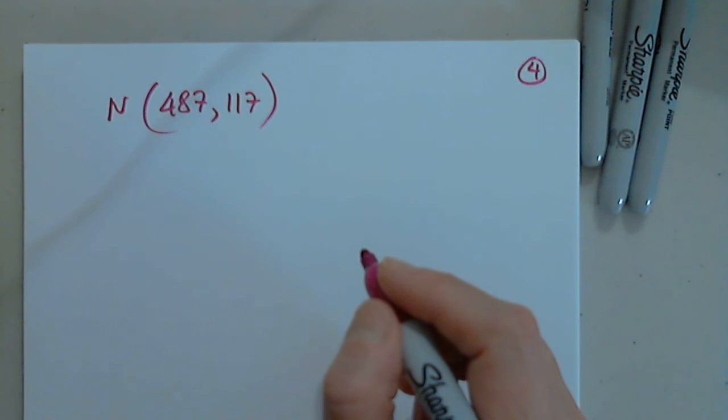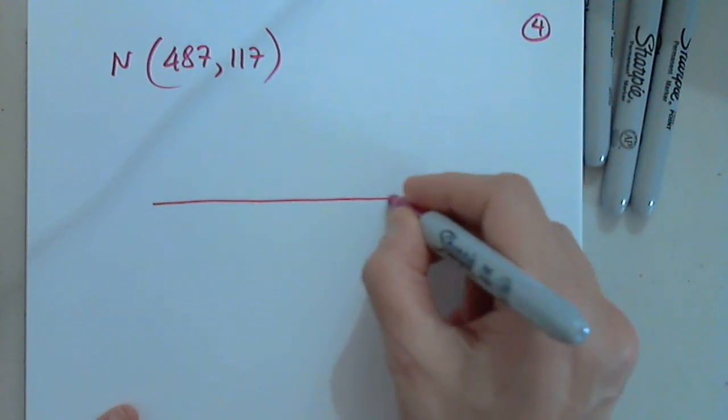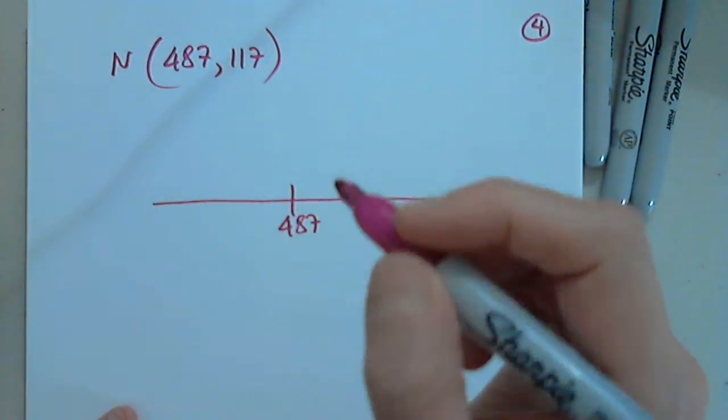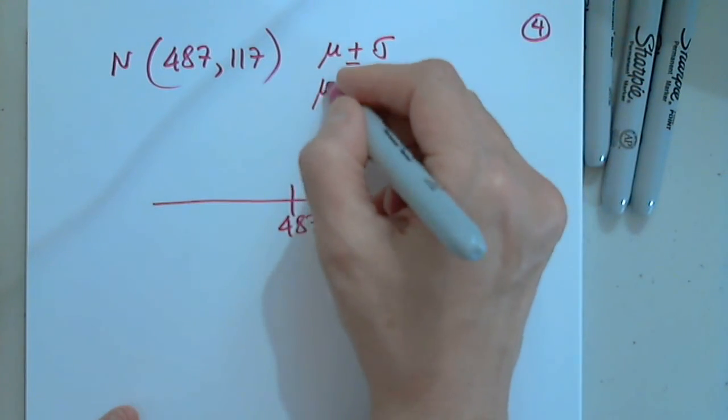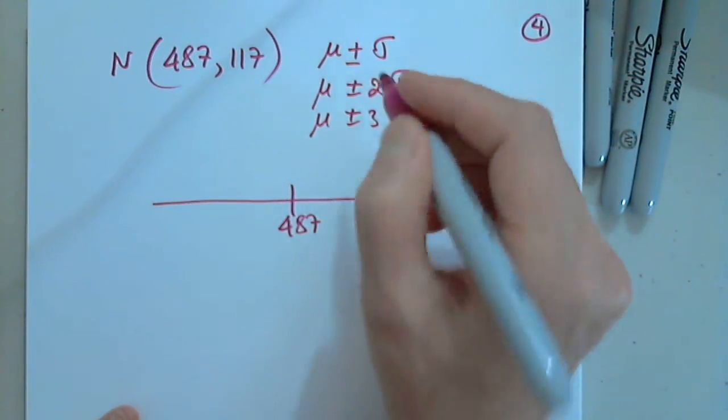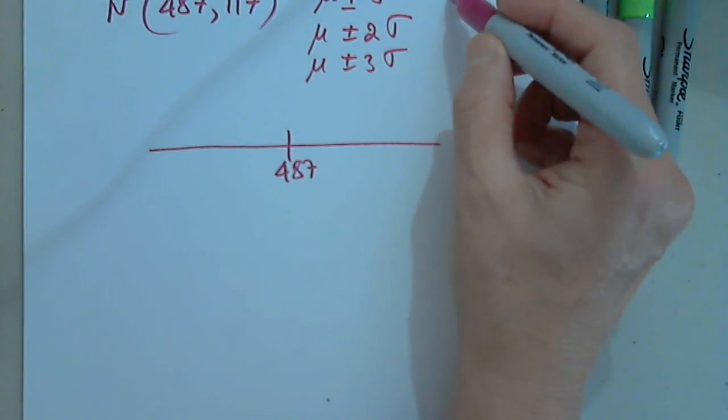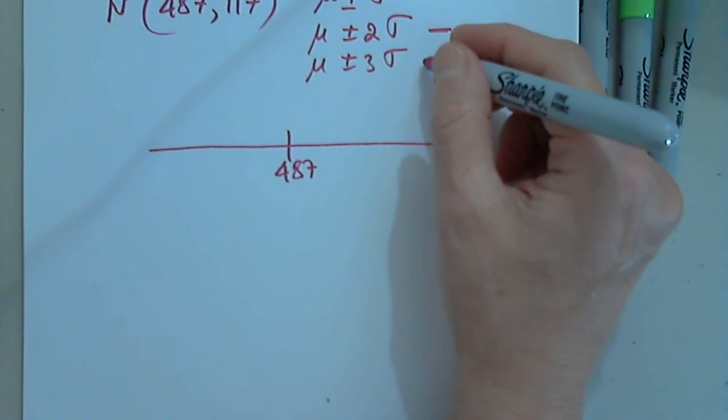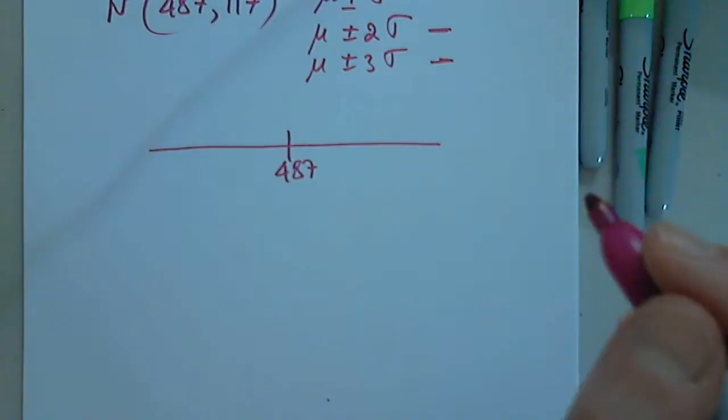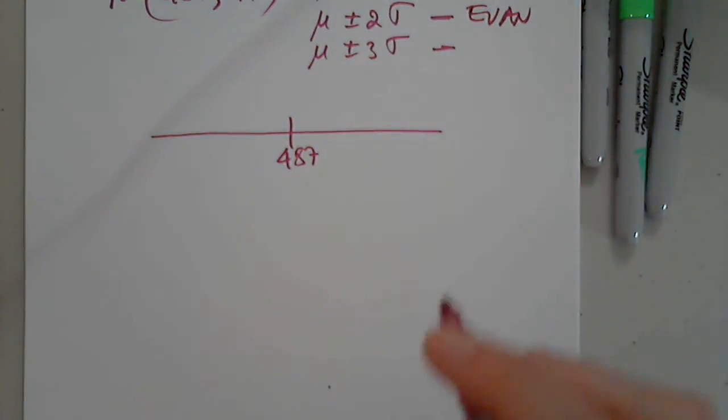So they want mu, they want all the positions. So what we are going to do is create the same graph, present 487 in the middle, and then determine mu plus and minus one standard deviation, mu plus or minus two standard deviations, and mu plus or minus three standard deviations. So Alex will give us the first one, Evan will give us the second one. And who would like the third one? Emma. Good. And Emma the third one.